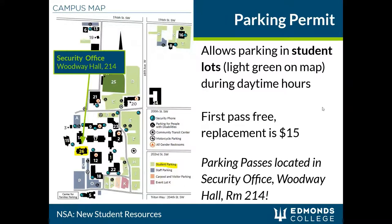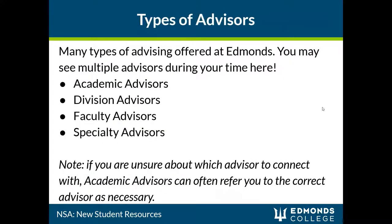One of the biggest resources for new students on campus is advising. There are several types of advisors you may see on campus during your time here, and you may have more than one advisor at a time for different needs. There are academic, division, faculty, and specialty advisors on campus. We are all here to help, and some of us have specializations in answering certain questions. If we know an advisor or area that is better suited to help you, we will point you in that direction.